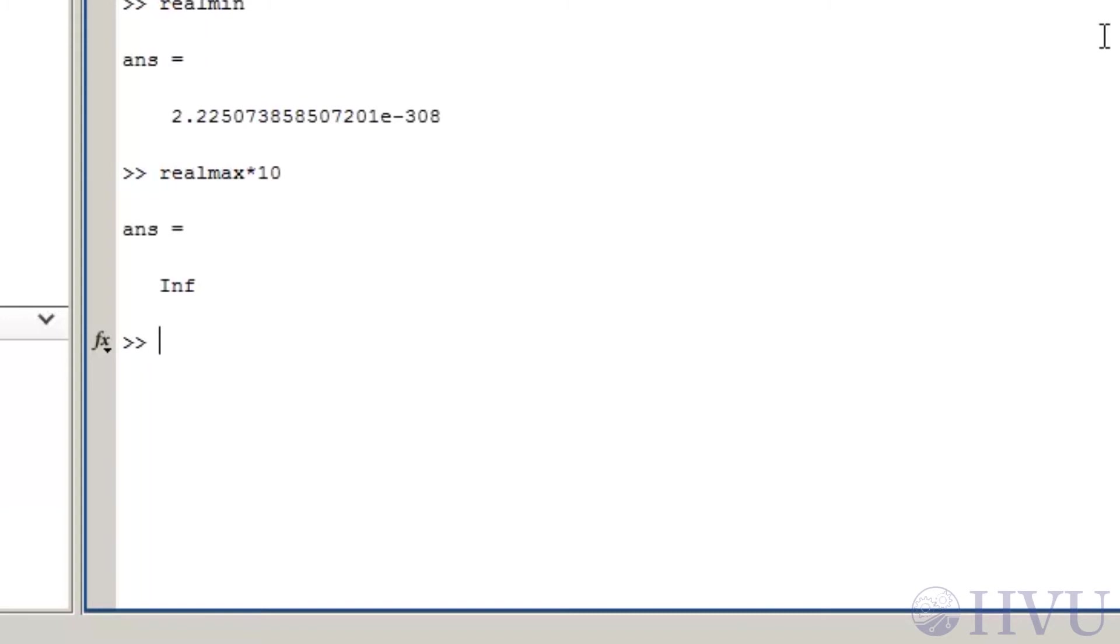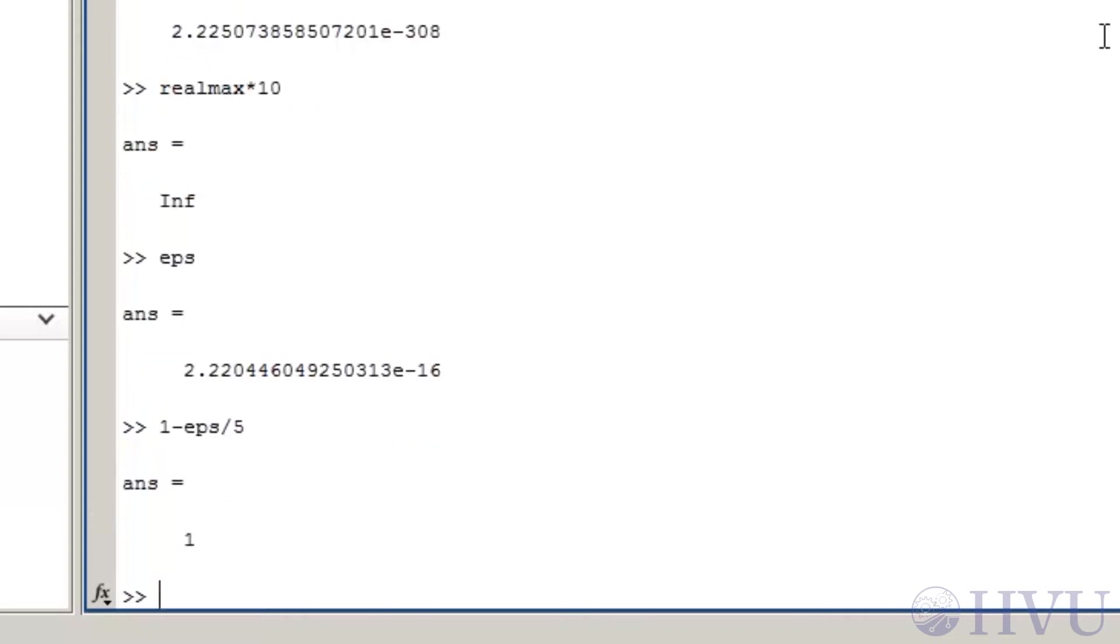Next, let's talk about the accuracy to which we can do arithmetic. Arithmetic is governed by the least significant bit of the mantissa of the numbers involved, which is the number EPS in MATLAB's workspace. EPS is about 2.2 times 10 to the minus 16th. If I try to subtract a number that's less than EPS from 1, MATLAB thinks that the number is exactly 1. So 1 minus EPS over 5 is exactly the same as 1.